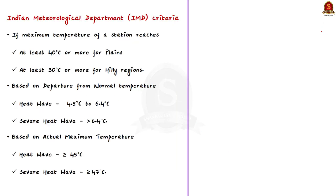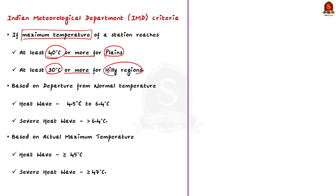The Indian Meteorological Department has given the following criteria for heat waves. The first criteria: a heat wave is considered if the maximum temperature of a station reaches at least 40 degrees Celsius or more for plains, and at least 30 degrees Celsius or more for hilly areas. So the criteria is different — for plains it is 40 degrees Celsius or more, and for hilly areas it is 30 degrees Celsius or more.